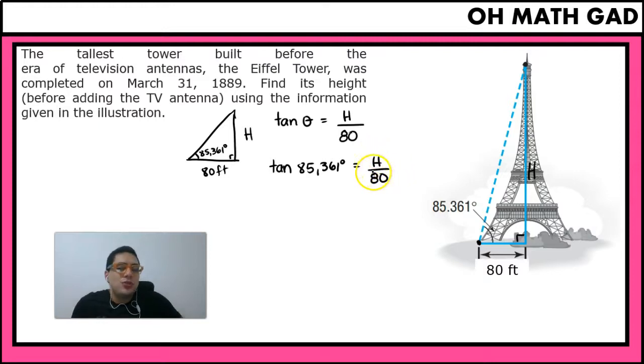And because we do not want to know the value of H divided by 80, we just want H, this 80 that is dividing is going to pass to the other side, multiplying. So 80 times the tangent of 85.361 degrees is going to be our value of H, which is going to be...